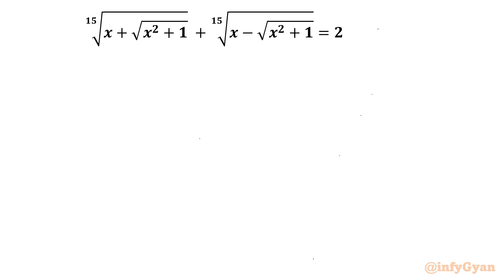Welcome back to Infigyan friends. In this video we are going to take up one very interesting and challenging question from radical equations. The given equation is the 15th root of (x + √(x²+1)) plus the 15th root of (x - √(x²+1)) equal to 2. We have to find out real solutions, so x belongs to real numbers. I will begin with our popular substitution.